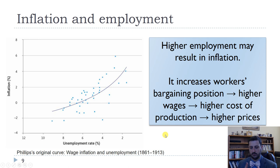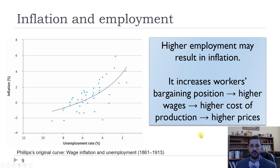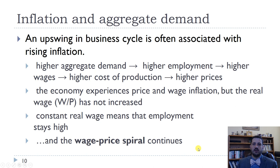So how might higher employment lead to inflation? A lower unemployment rate means it's harder to find workers. So firms have a worse bargaining position and workers have a better bargaining position. That leads to higher wages, which means costs for firms are higher, and given their markup, that leads to higher prices. This was an observation by Phillips in the 1950s, and it seemed to hold true at the time, and it makes sense in our aggregate demand model.